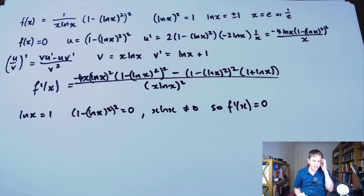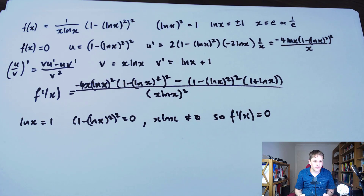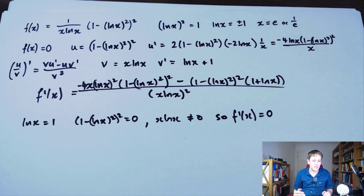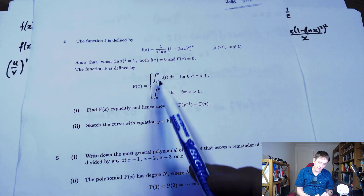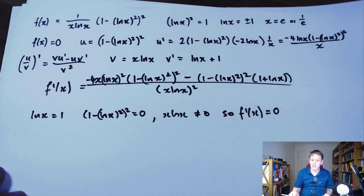So actually quite a lot of work there — we haven't even got to part 1 yet, so we do have to be rigorous. Now we're shown this function capital F defined by a piecewise definition: two parts, one defined for 0 < x < 1 and one for x > 1, fundamentally involving the same integral of this function. We have to find capital F(x) explicitly in the next part, so let's do that.